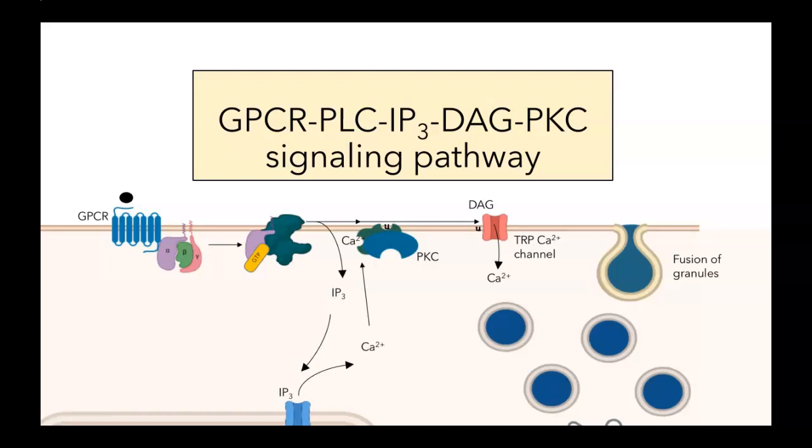Many hormones, neurotransmitters, and other signaling molecules exert their effects through what's called the G-protein-coupled receptor, PLC, IP3, DAG, PKC signaling pathway. Let's take a look at it.